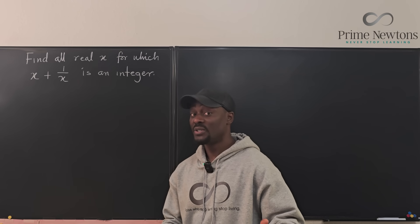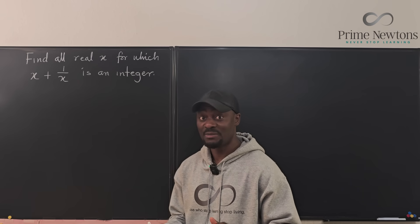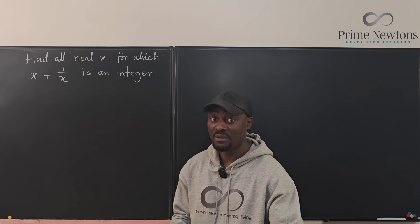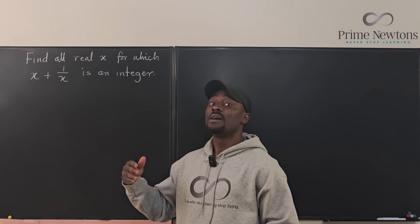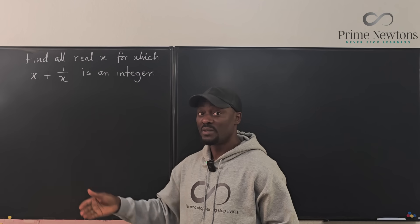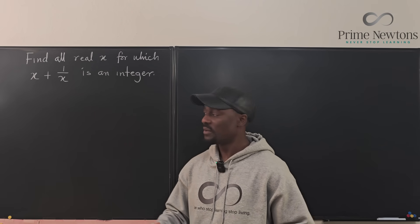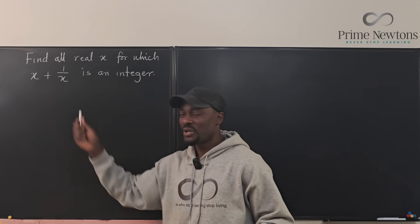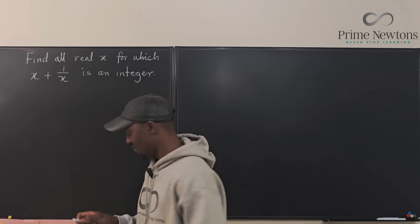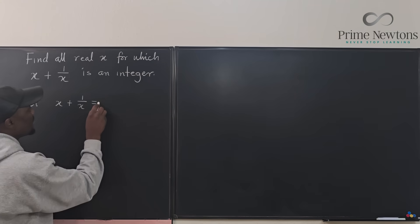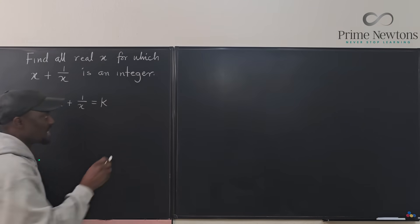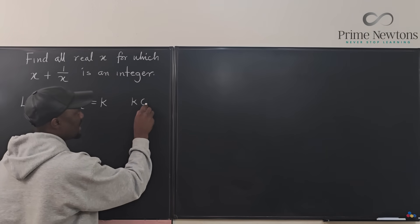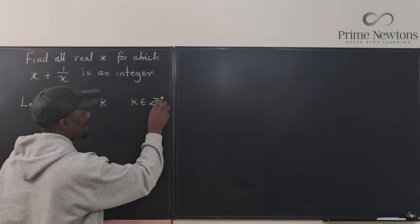This is a particularly easy exercise because all we have to do is make an assumption that apart from 1 and minus 1, we can find other solutions. So what we're going to say is, let this expression be an integer k, where k is an integer.